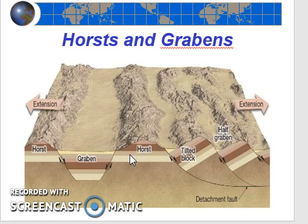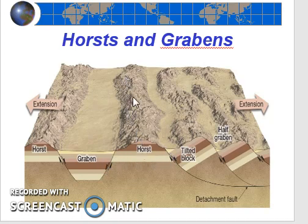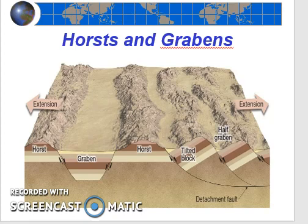Horsts, in contrast, are up-faulted blocks — essentially the foot walls that are surrounded on both sides by normal faults — where the hanging wall has slipped down, leaving the higher rock in between. So fault block mountains, horsts, and grabens are three different landforms associated with normal faults and the tensional stress that causes those normal faults.